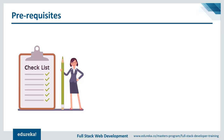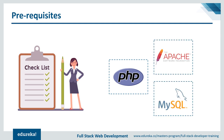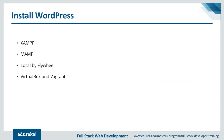Before we install WordPress on our systems, let's look at a few requirements. In order for WordPress to run on our systems, we need three things: PHP, Apache, and MySQL. There are many tools out there that will automatically install all three of them for you. To mention a few, there's MAMP, there's Local by Flywheel, and VirtualBox, and so on.